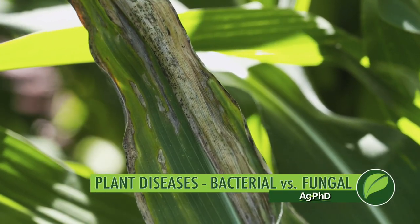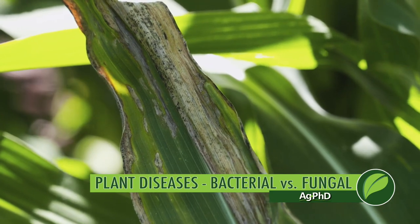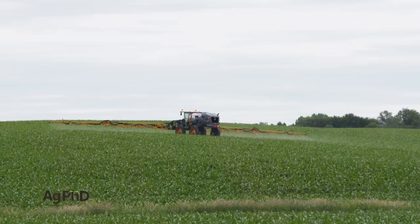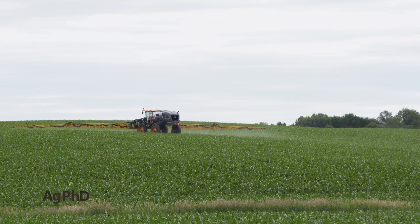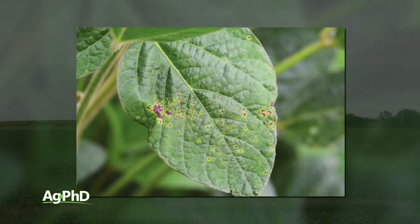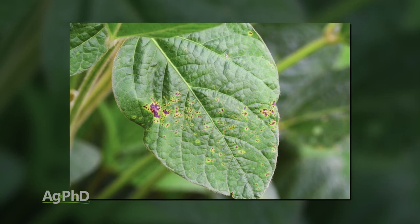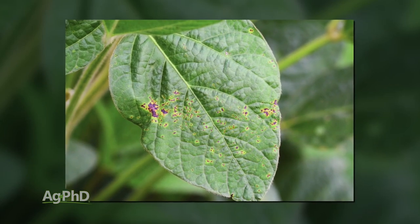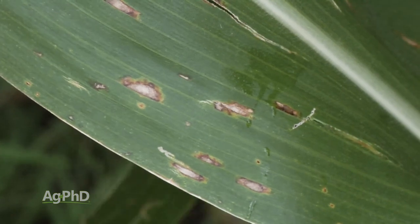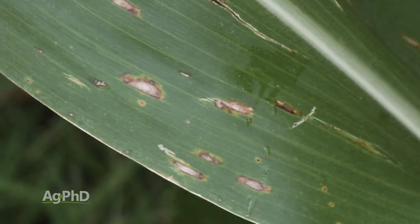If you're concerned about a disease issue on your farm, you're probably thinking you'll just go in and spray a fungicide. That's great if you have a fungal disease. The problem is we're seeing more and more bacterial diseases in crops like corn, soybeans, and even wheat and other crops. The whole trick is: which type of disease do you have, and can you control it with a fungicide?